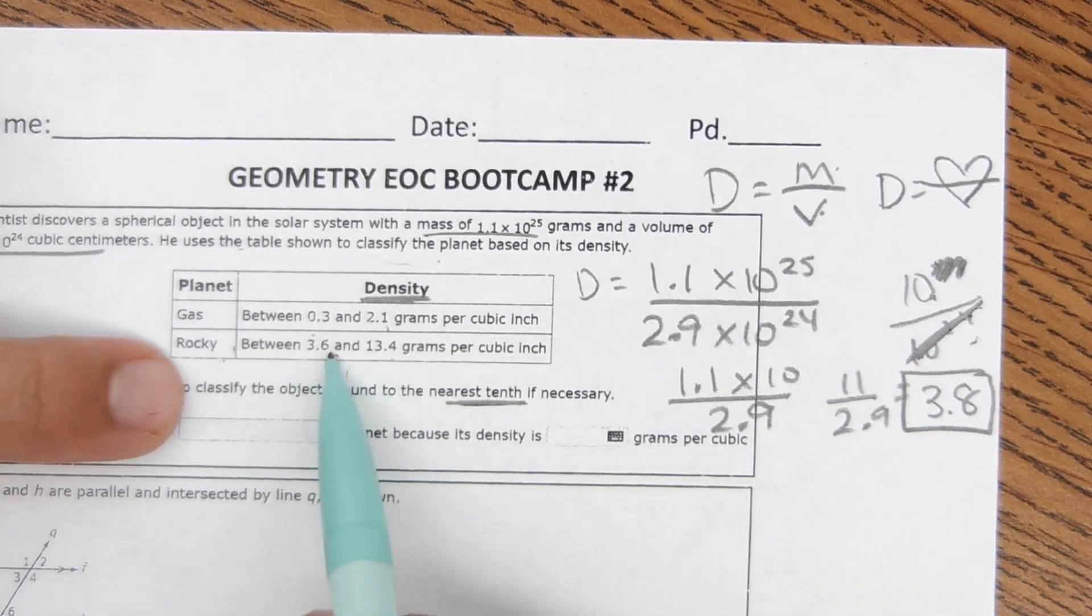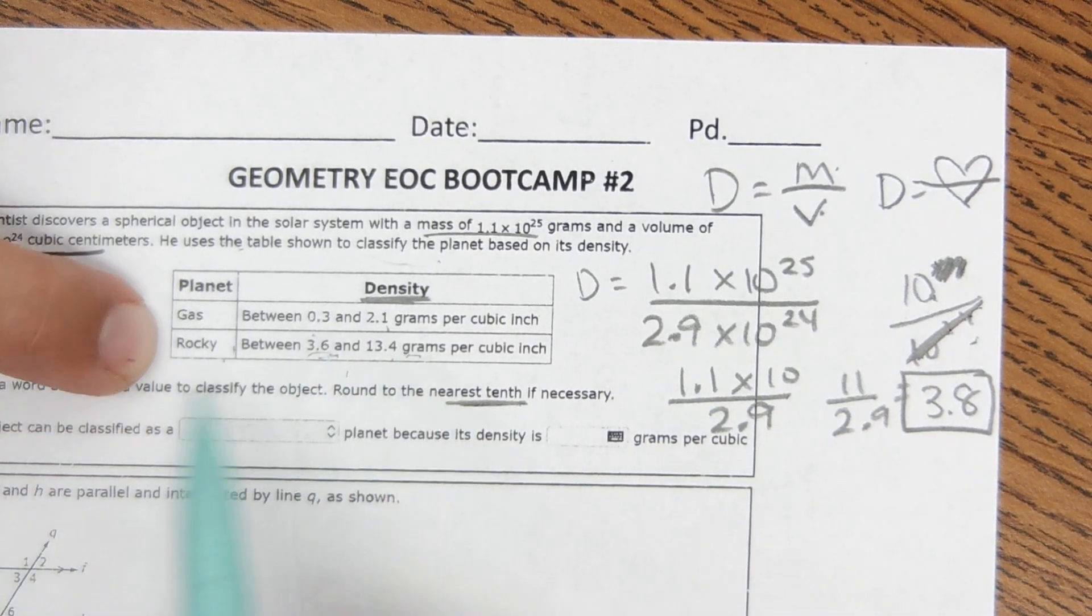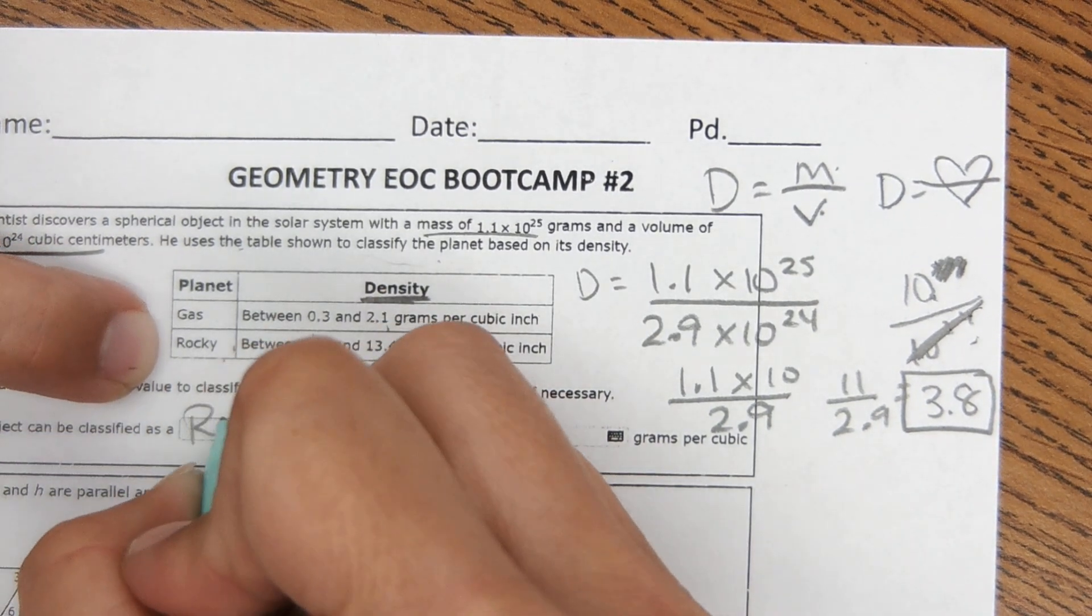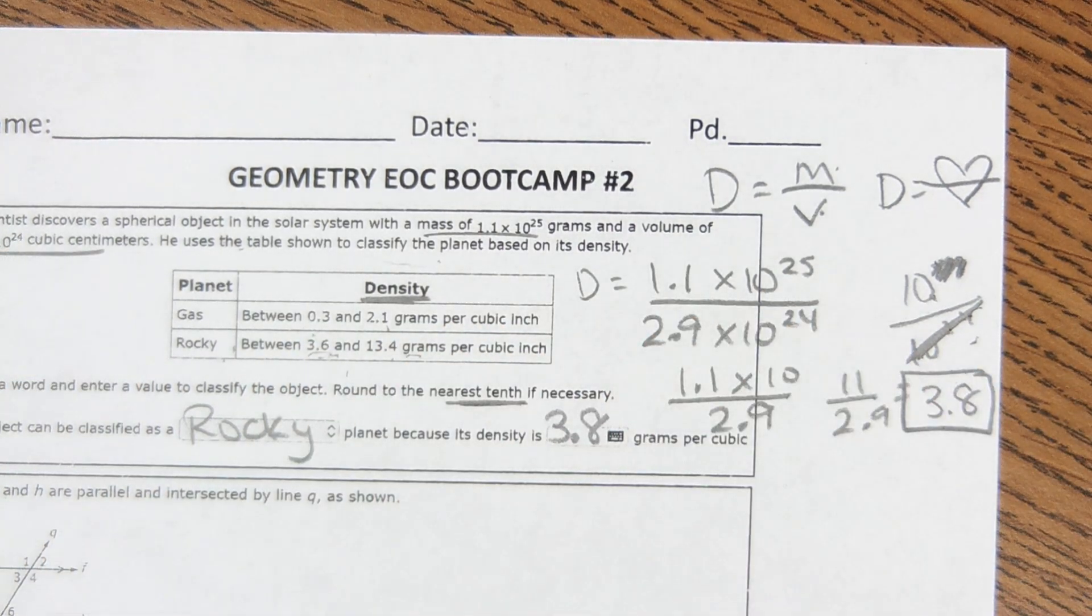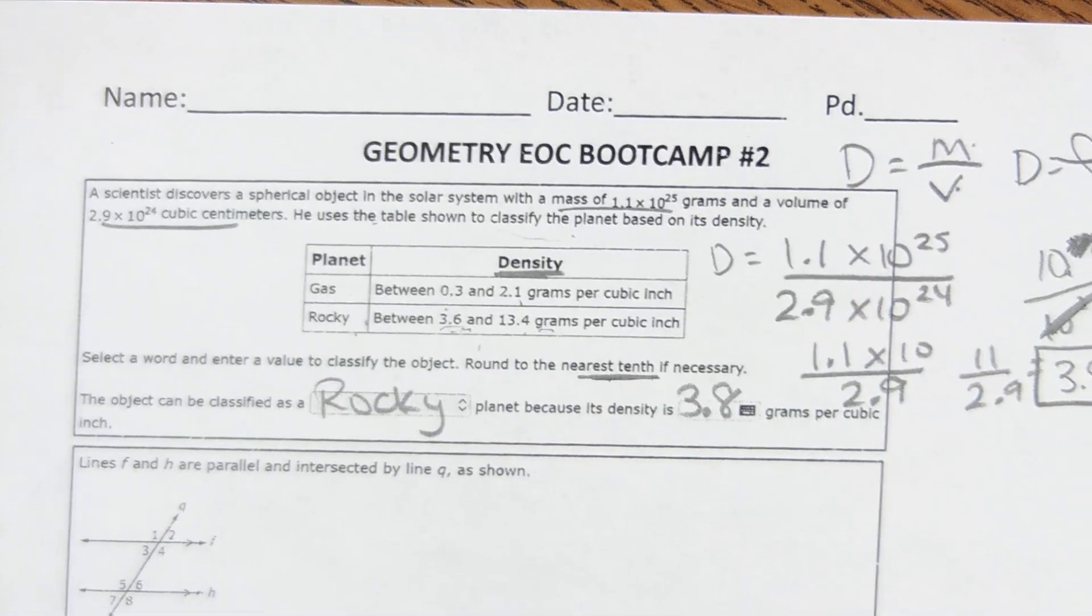So 3.8 would land in this rocky range, so the object can be classified as rocky because its density is 3.8 grams per cubic inch.